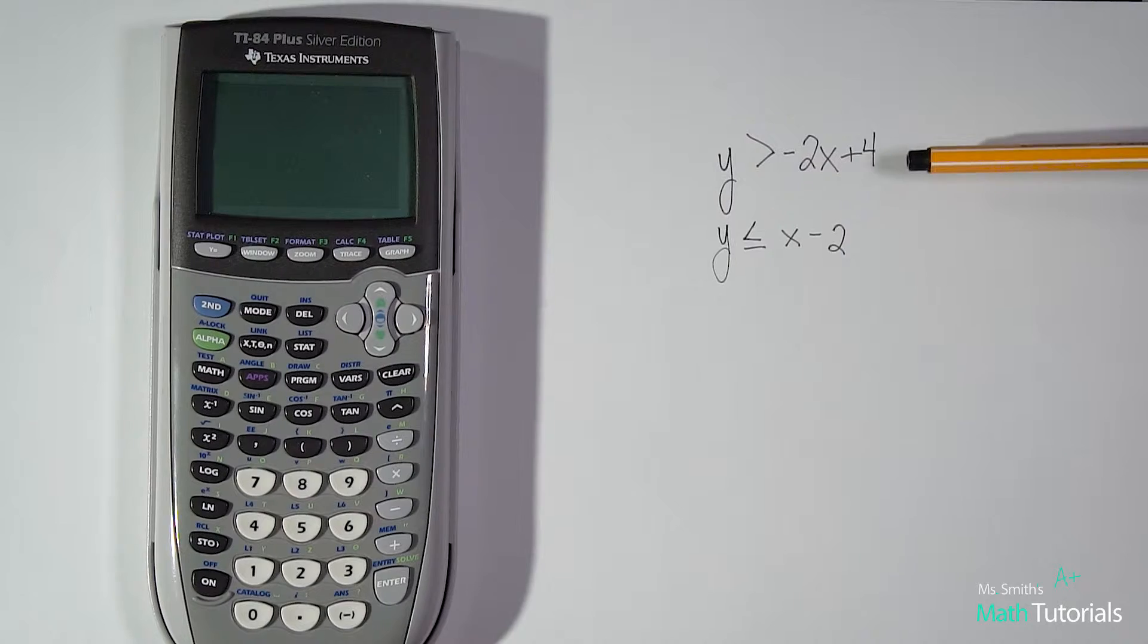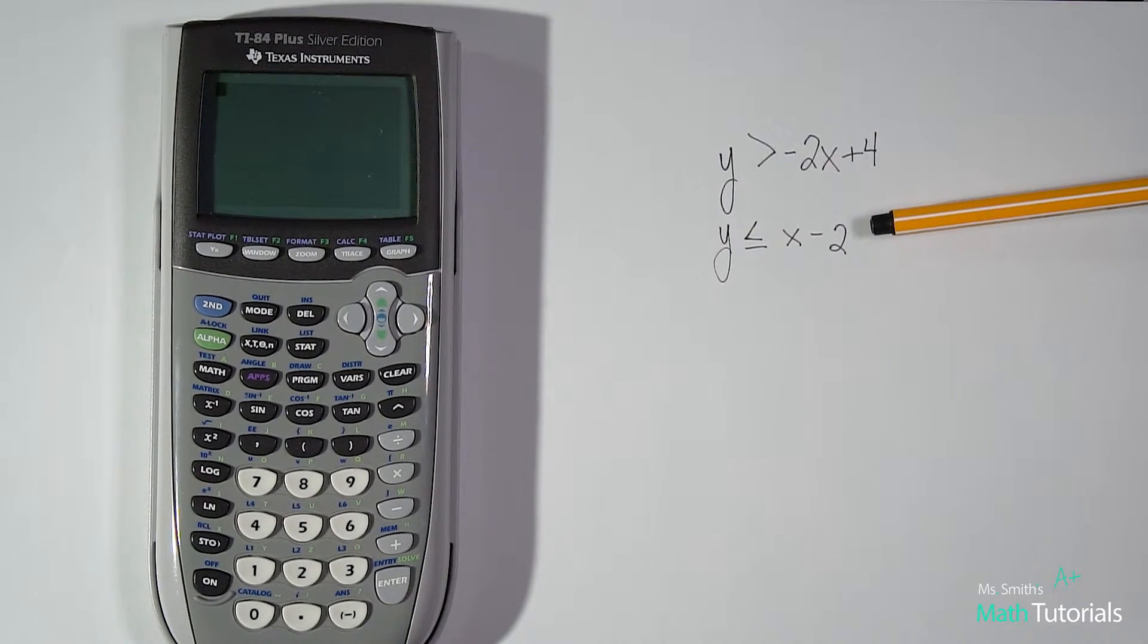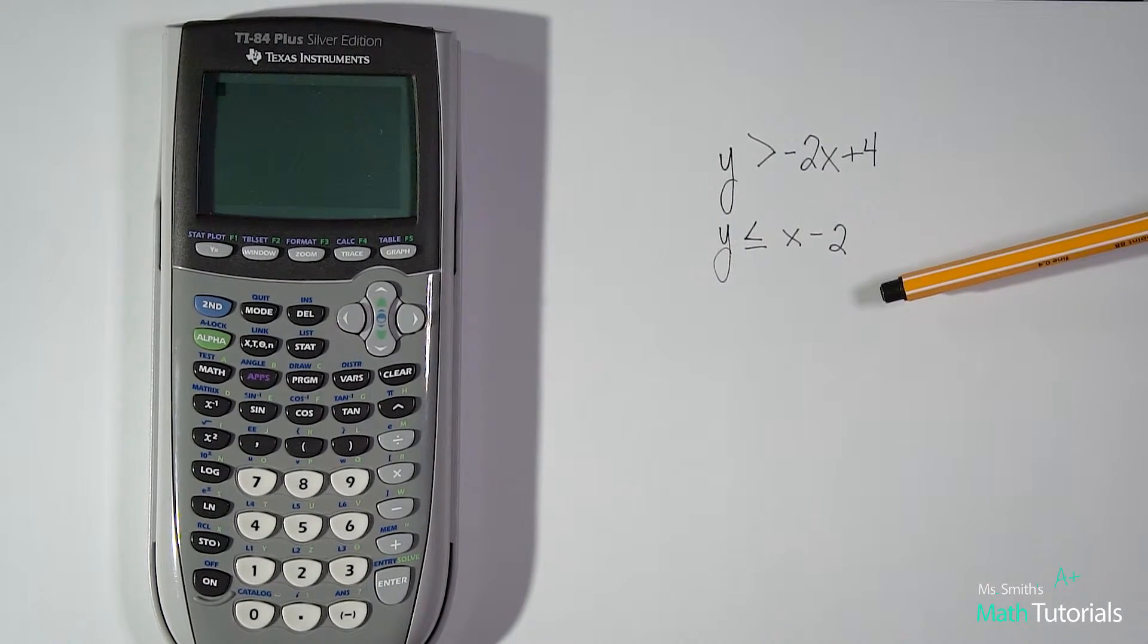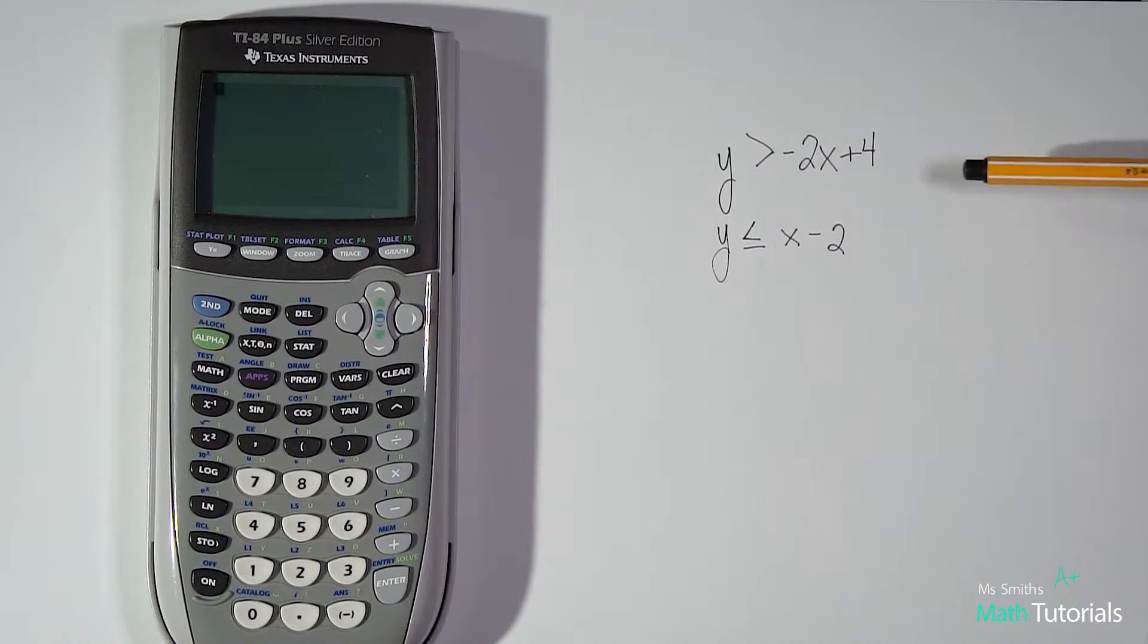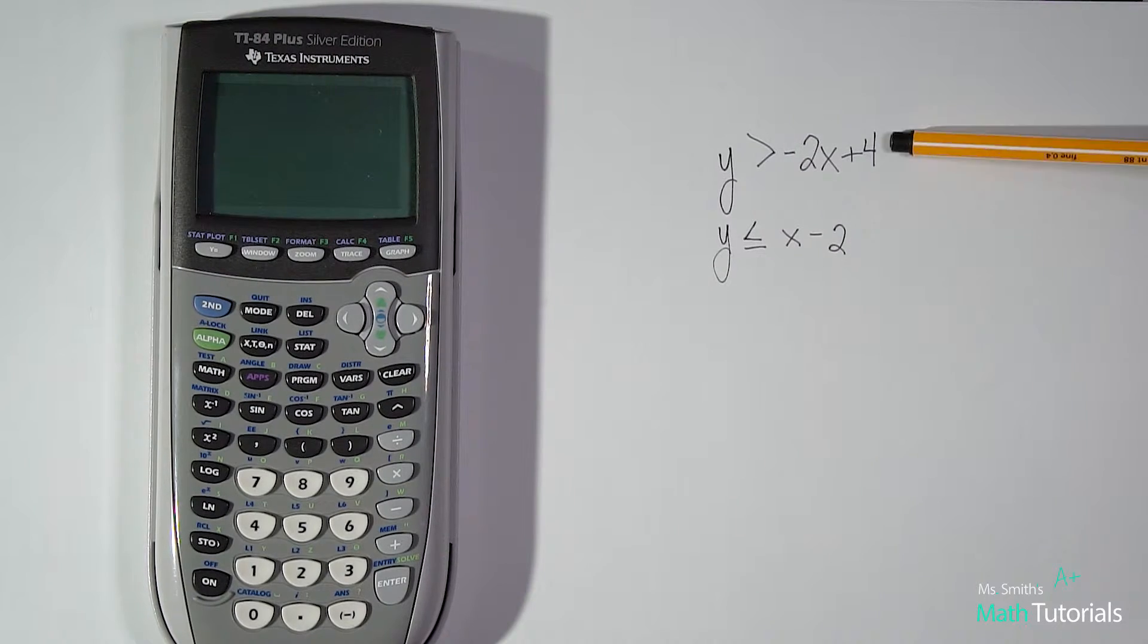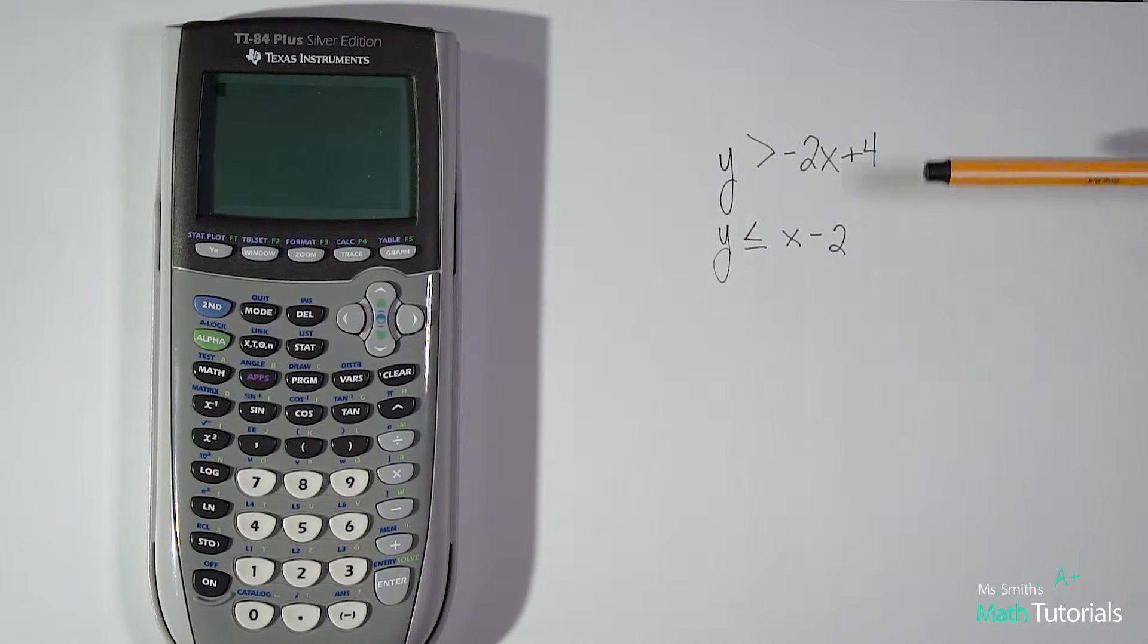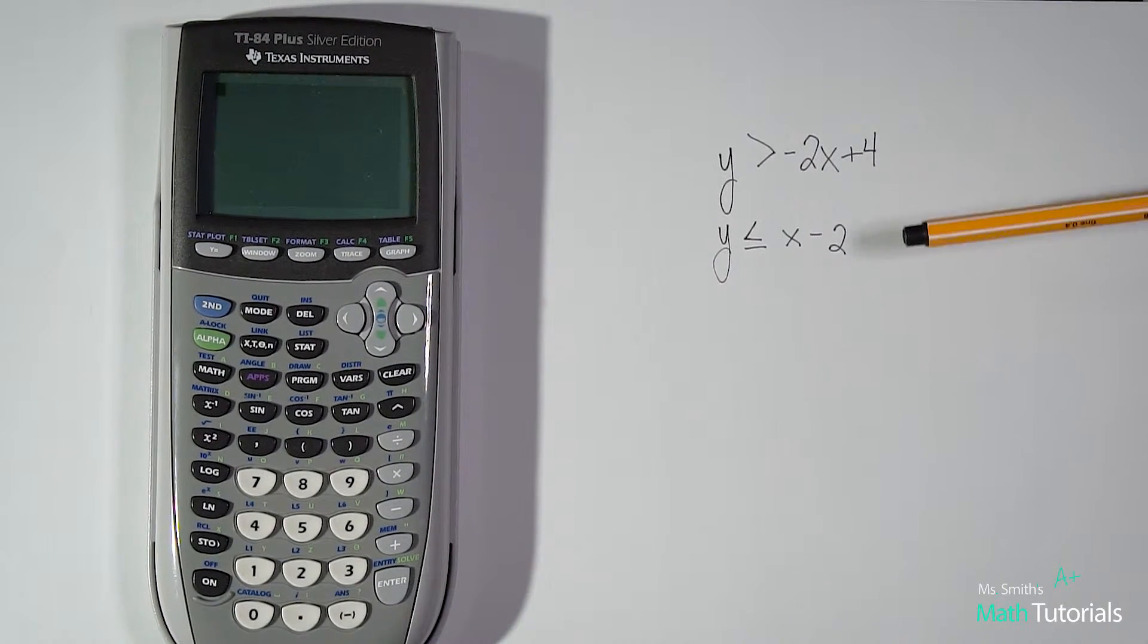In this second example, you'll notice I have a system. I've got two. But these are inequalities. So before I had equal sign in my equation. Now I've got my inequality symbols. Works the same way. You still need to make sure both are in slope intercept form. And luckily these two already are. So again, if they were not in that form, you're gonna have to get them in that form before we can use our calculator to solve it.